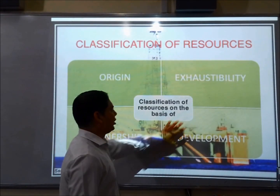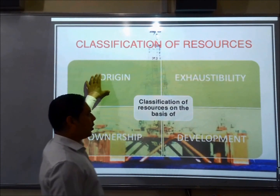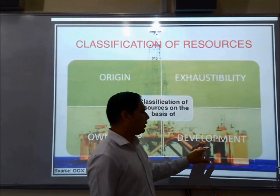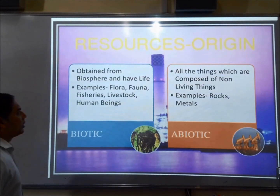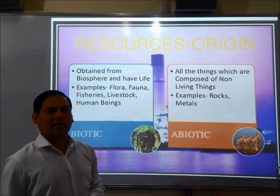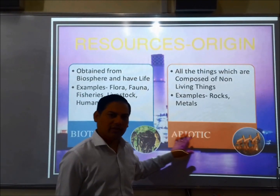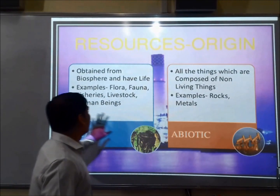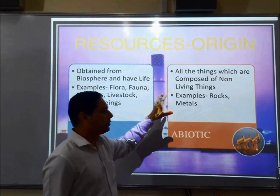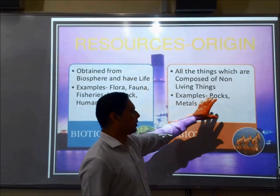On the basis of these four criteria, how can resources be classified? On the basis of origin, exhaustibility, ownership, and development. On the basis of origin, resources can be classified into two: biotic and abiotic — that is, living and non-living. Biotic resources are obtained from the biosphere; examples include flora, fauna, fisheries, and livestock. Abiotic resources are composed of non-living things; examples are rocks and metals.